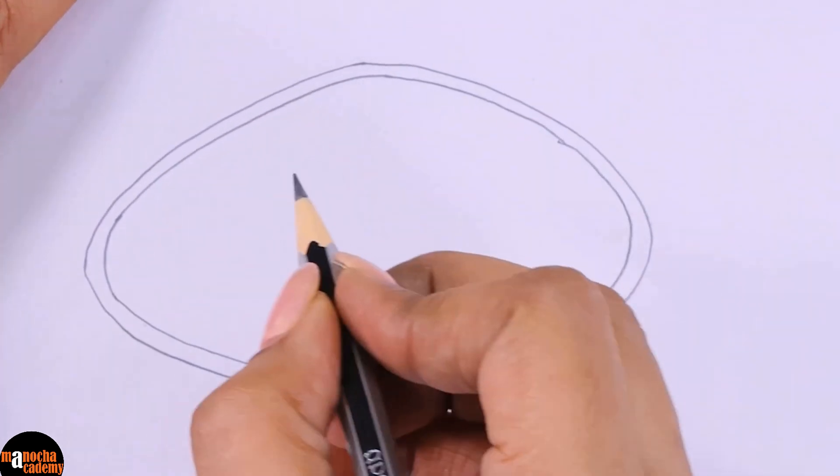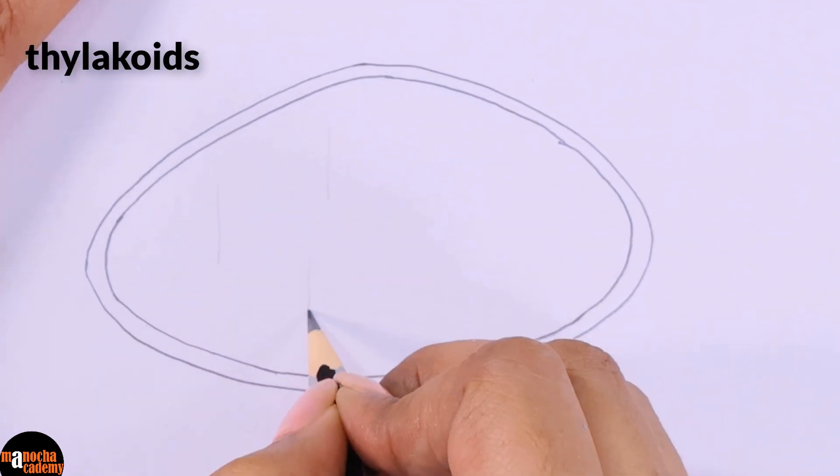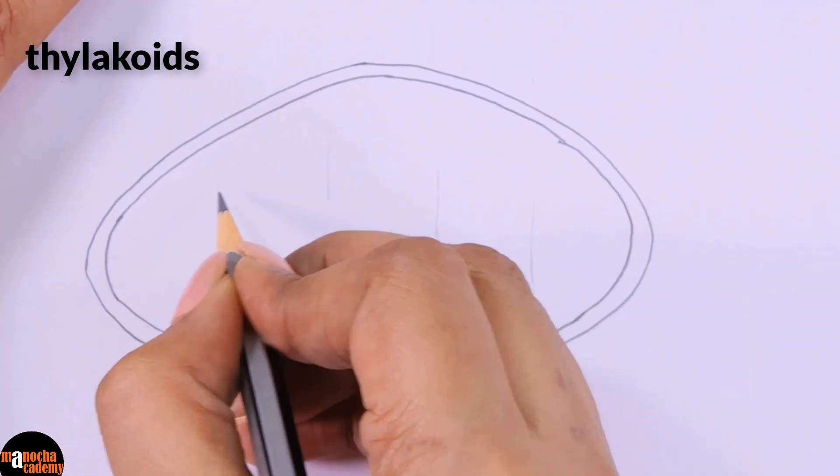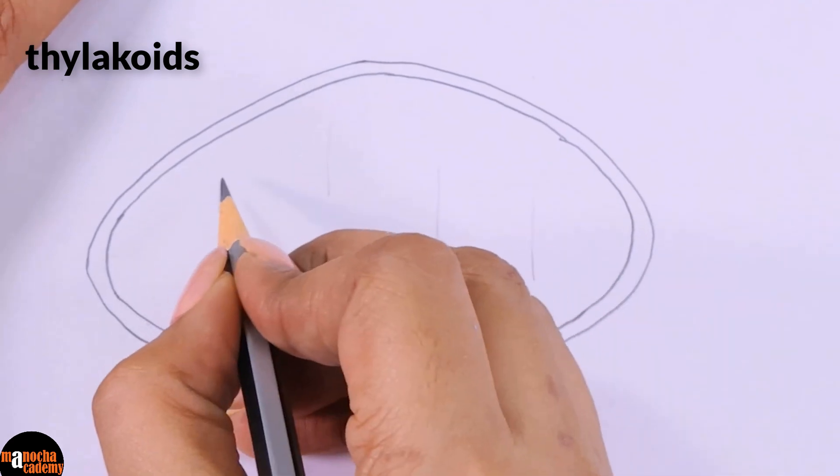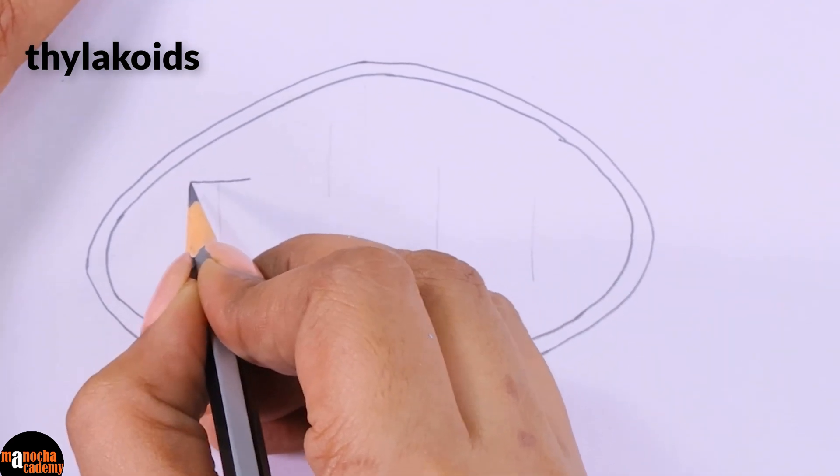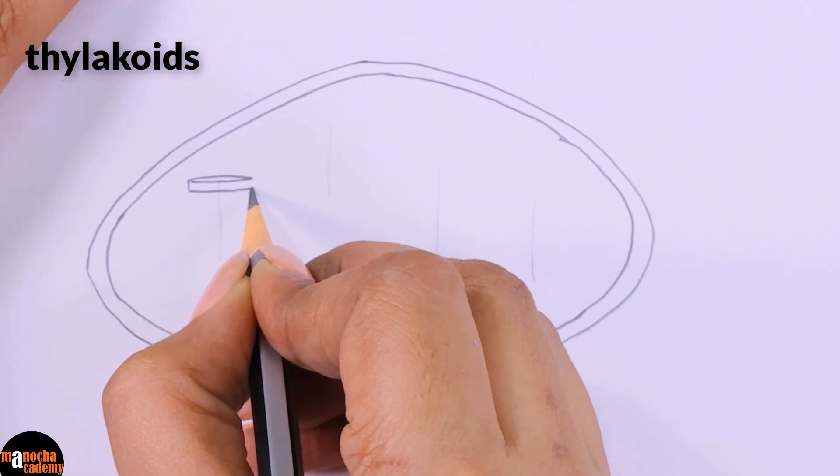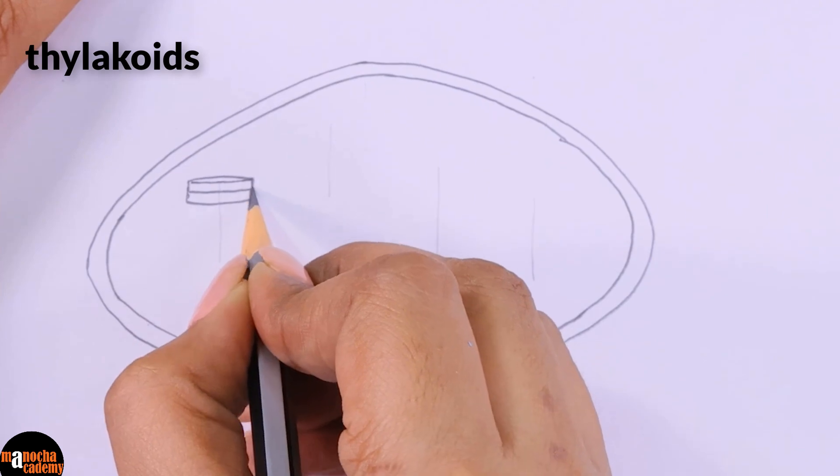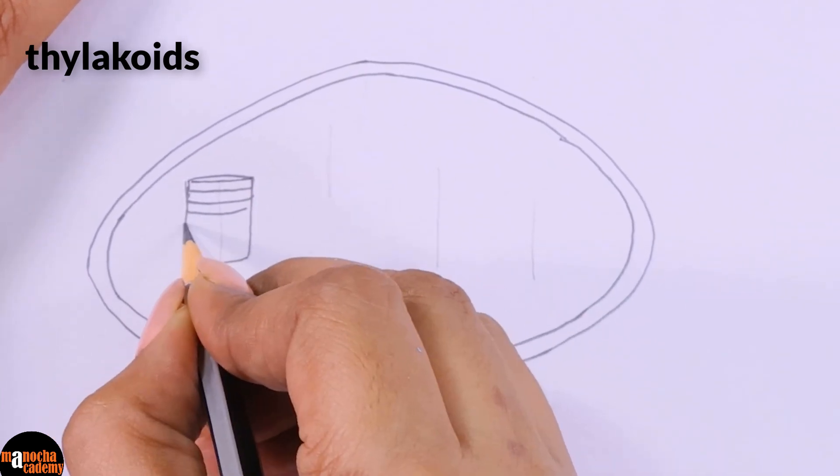You can draw few thylakoids as many as you want. I am drawing five. When I am drawing the thylakoids see I have drawn these lines. This will be the length of the grana. So now I am drawing the thylakoids. They are disc shaped structures. This is a very diagrammatic presentation.